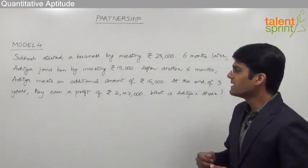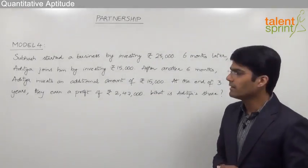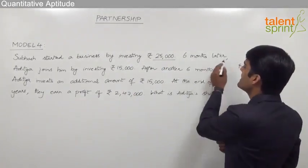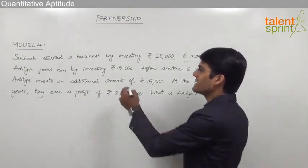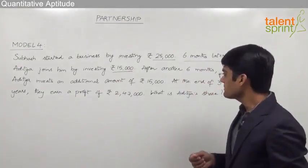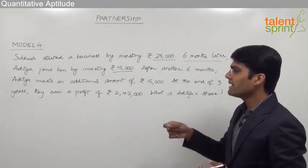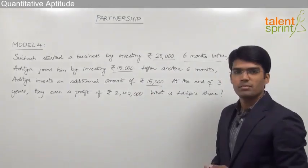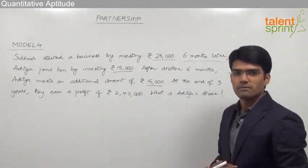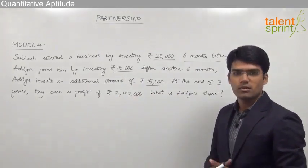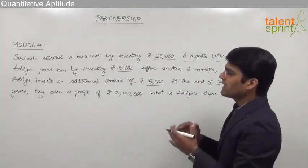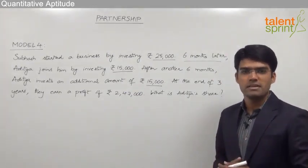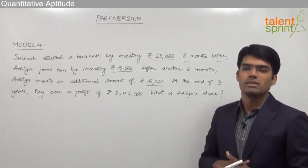We have two partners: Subhash and Aditya. Subhash started the business investing 25,000. After six months Aditya joins by investing 15,000, and after another six months Aditya invests an additional 15,000. We need to find the ratio of these two partners and get Aditya's share from the total profit. The concept behind solving the question remains the same: the profit of a person depends on his investment multiplied by the time of investment.